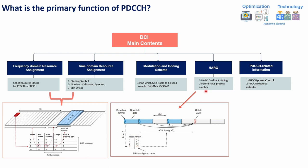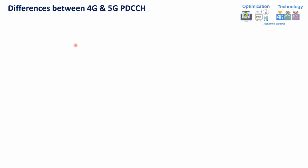The DCI also carries PDCCH-related information including power control and PDCCH resource indicators. DCI carries much more information than covered here, but these are the most important fields typically used in daily optimization.